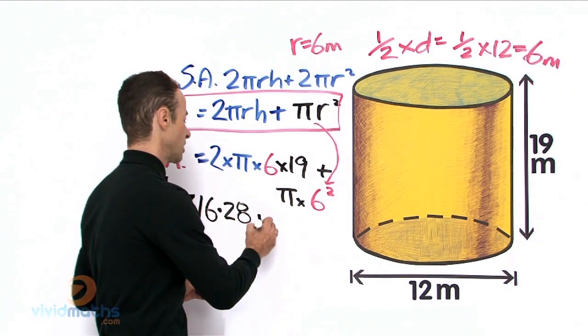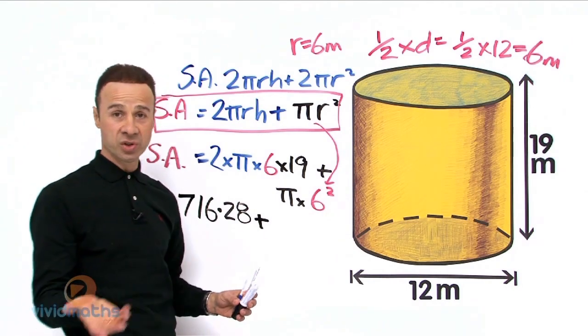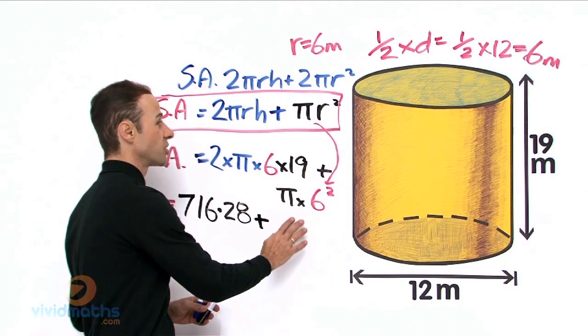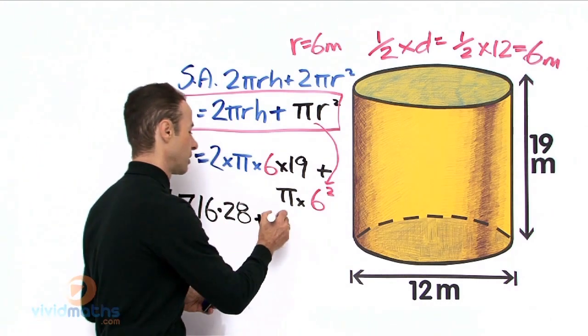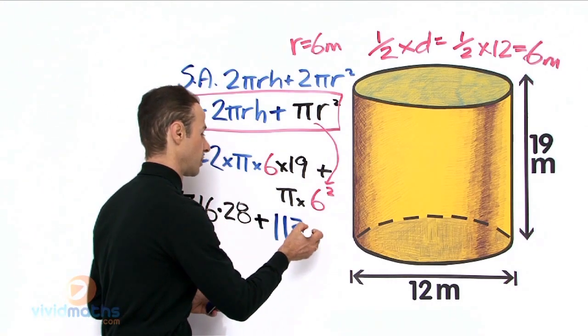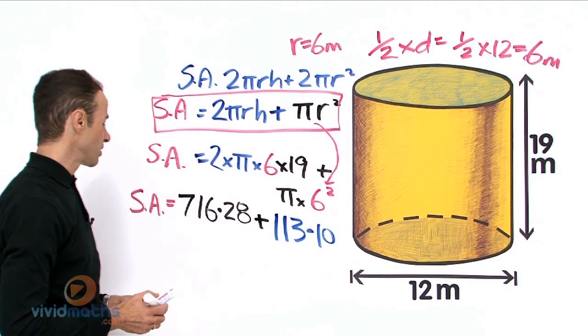So let's plus that. So π times 6 squared, which is 36. Just that part there is going to give us a grand total of 113.10, rounded up, rounded up to two decimal places.